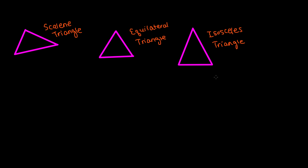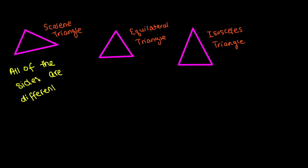Next we have the triangles that are based on the measurement of the sides. We have scalene triangle, equilateral triangle, and isosceles triangle. Some of you might be familiar with these words, but some of you might not. The very first one is the scalene triangle — a scalene triangle is a triangle in which all of the sides have different measurements. That's one important thing to remember about a scalene triangle.